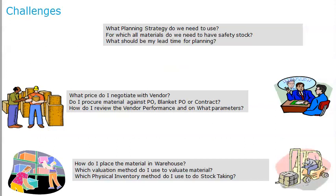Now what are the challenges in SAP Material Management? What planning strategy do we need to use is the most important question. For which materials do we need to have safety stock? What should be my lead time for planning? These are the things when it comes to planning and procurement. And then — what price do I negotiate with the vendor so that it will be a win-win situation? Do I procure materials against a purchase order, a blanket purchase order, or a contract? How do I evaluate the vendor performance and on what parameters?